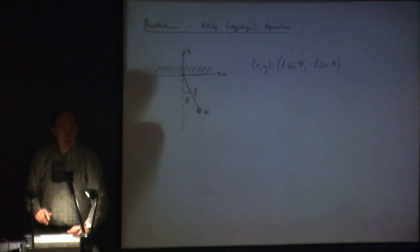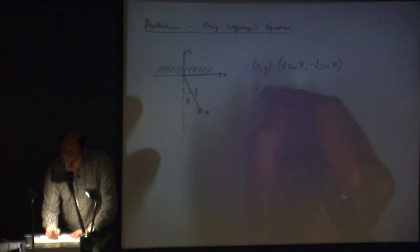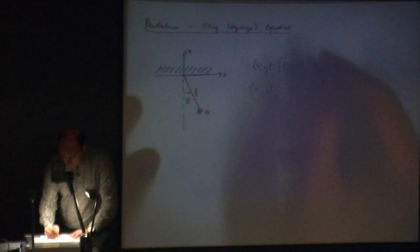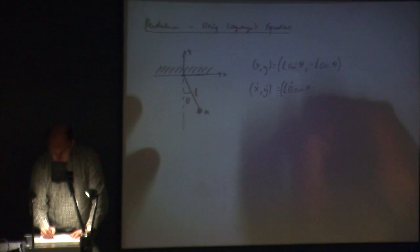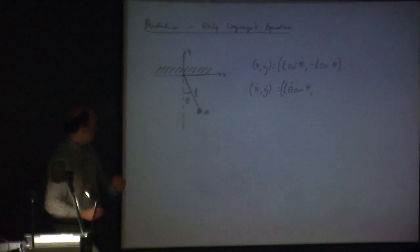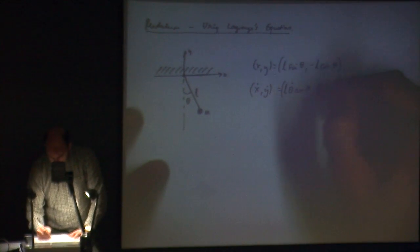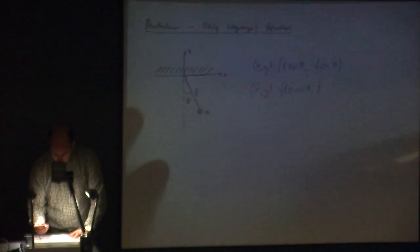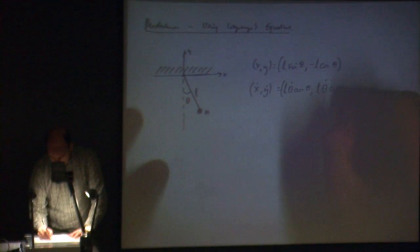To get the kinetic energy we need the velocity, so we take the time derivative of this. So x dot is going to be l theta dot cosine theta, and obviously cosine turns into minus sine, so this becomes a plus, giving l theta dot sine theta — because we've taken the time derivative of the variable that varies with time, so we write theta dot out front times by sine of theta.